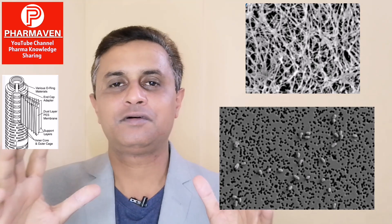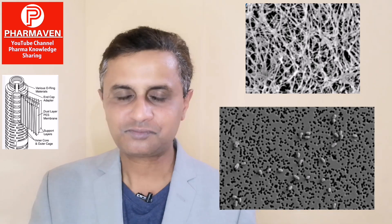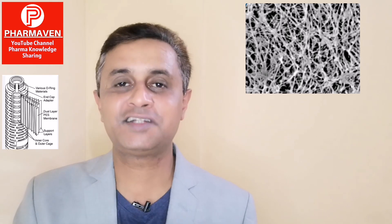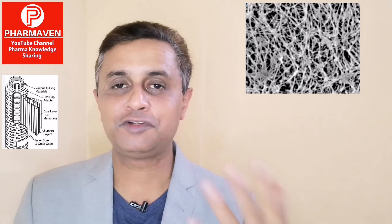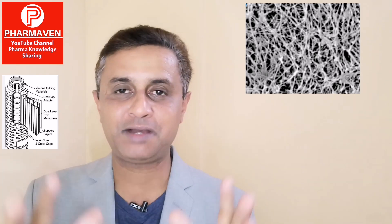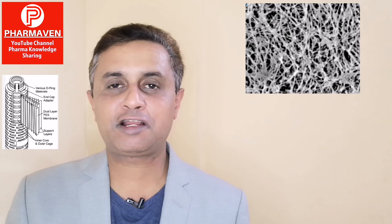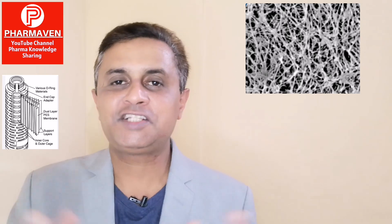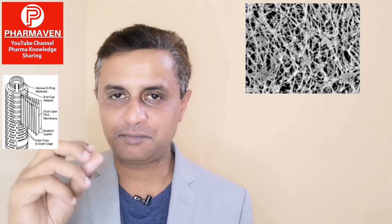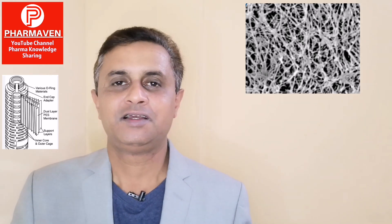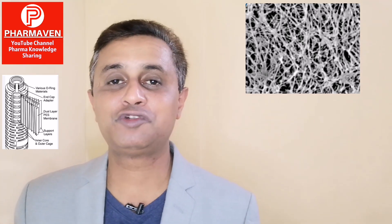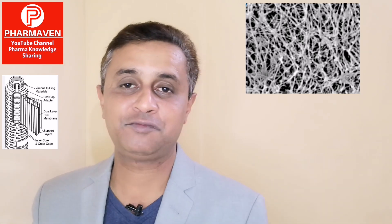The second mechanism is adsorption, which is charge-related. It is impacted by the composition of the liquid, temperature, and filtration conditions. By adsorption, microorganisms adhere to the microfibers of the filter. Through this mechanism, even if the bacteria size is smaller than the pore size, if the adsorption sites are available on the filter structure, they will be retained. So by adsorption, even bacteria smaller than the pore size of the filter will get retained.